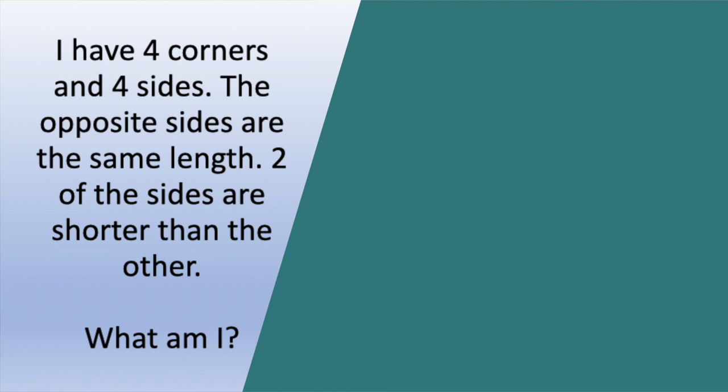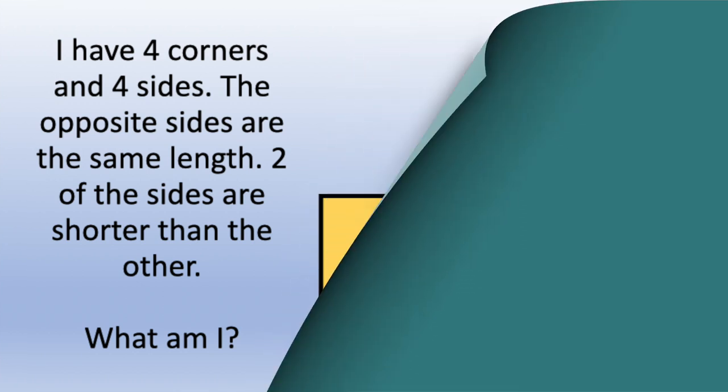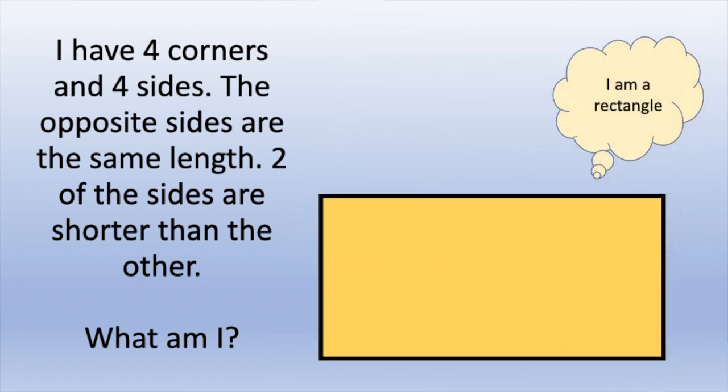I have four corners and four sides. The opposite sides are the same length. Two of the sides are shorter than the other. What shape am I? What could it be? What do you think? I am a rectangle.